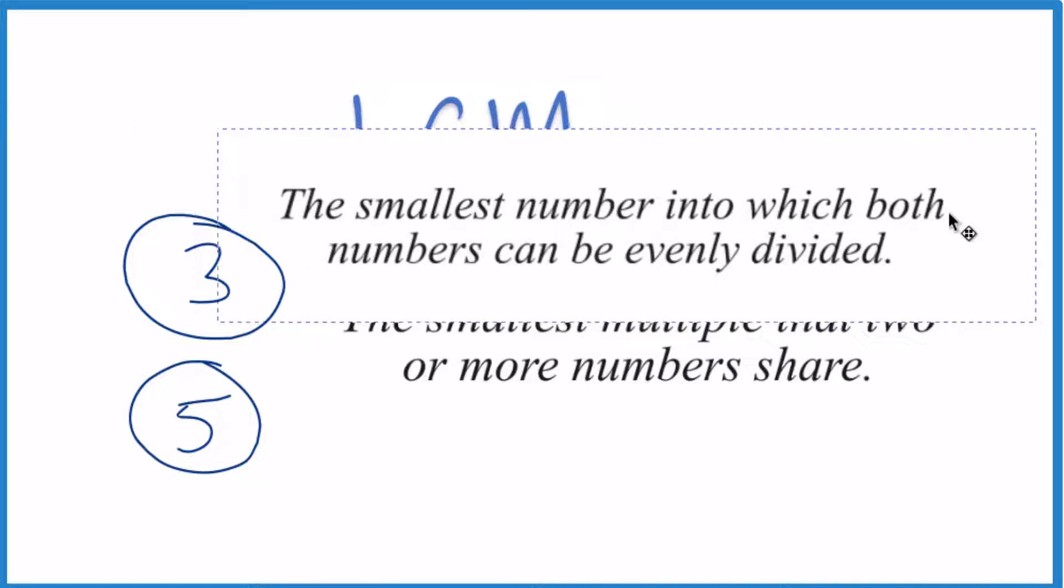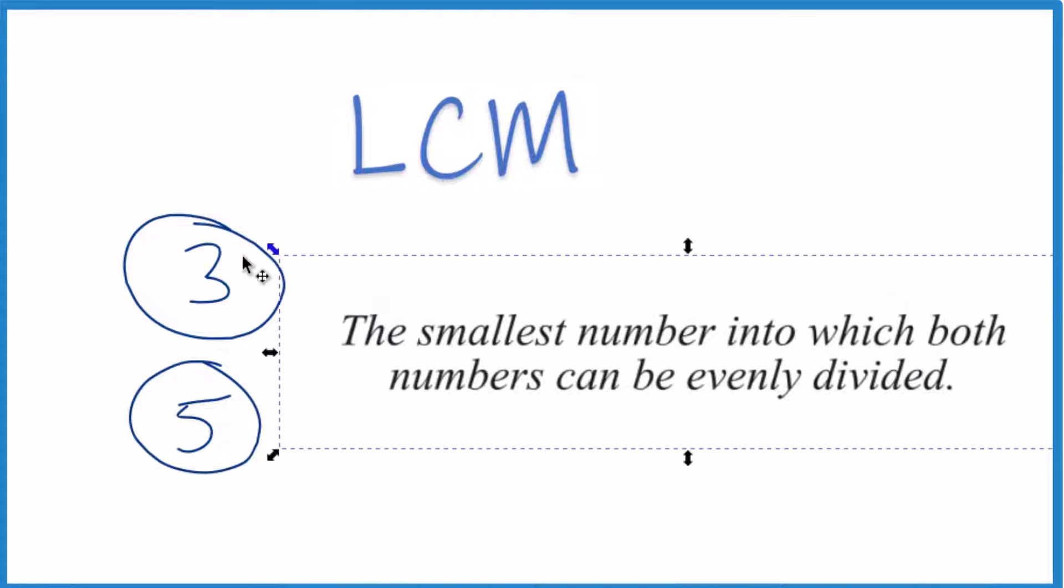You could think of it this way. What's the smallest number that both of these numbers here, 3 and 5, will divide into evenly? So that's the LCM.